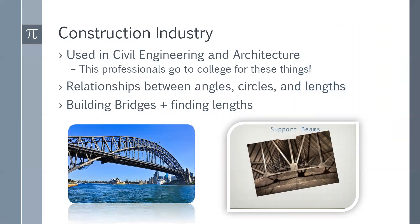So the construction industry is something that's really important to us, because those individuals working in this industry are the ones creating different buildings, bridges, and many more. A lot of these people are architects and civil engineers, and they go to college for a really long time just to get experienced and certified. Architects use trigonometry to calculate structural load, roof slopes, and the placement of lengths used for supporting beams.